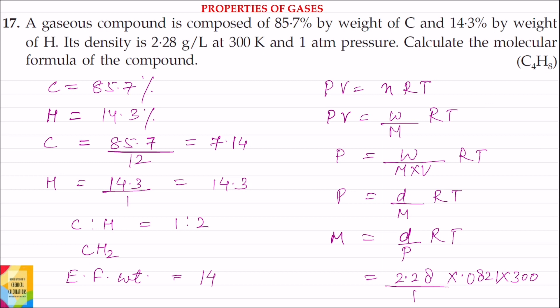Question 17. A gaseous compound is composed of 85.7% by weight of carbon and 14.3% by weight of hydrogen. Its density is 2.28 grams per liter at 300 Kelvin and 1 atm pressure. Calculate the molecular formula of the compound.